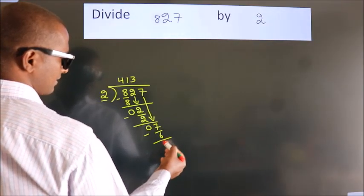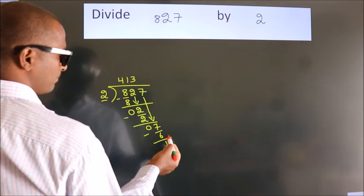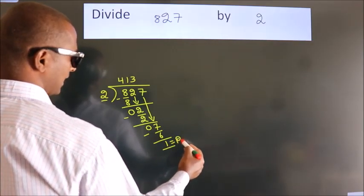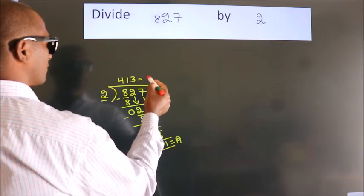After this, no more numbers to bring it down. So we stop here. This is our remainder. This is our quotient.